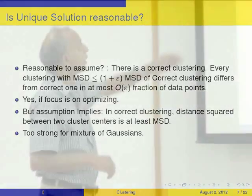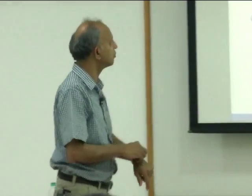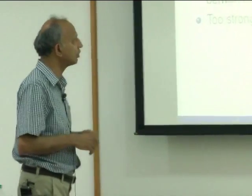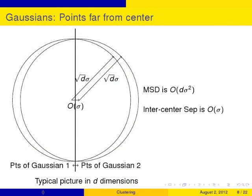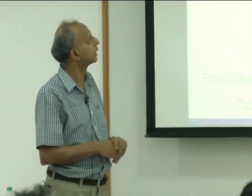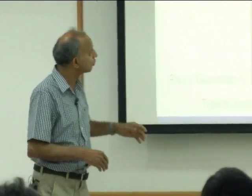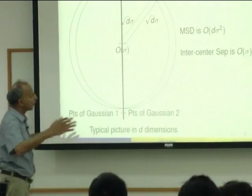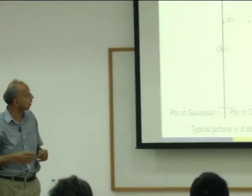Is the unique solution assumption reasonable? We assume there is a correct clustering, and every clustering that is off by epsilon in mean squared distance is off by only ten-epsilon-n in the number of points. Is that reasonable? In the correct clustering, the distance squared between two clusters must be at least the mean squared distance — and this is too strong for Gaussians. Here are two D-dimensional Gaussians centered at two points. They are spherical Gaussians, so the level curve shows the standard deviation is the same in all directions.